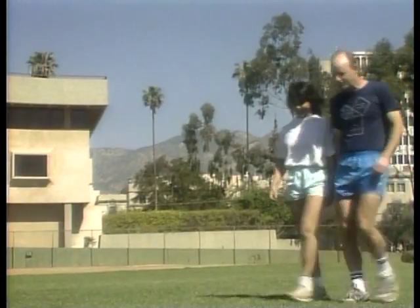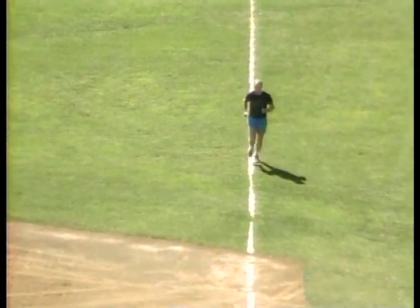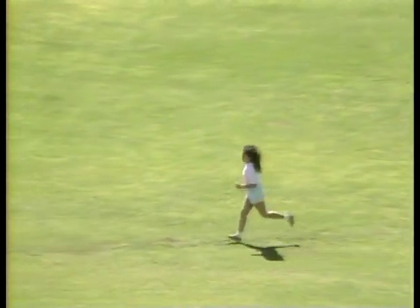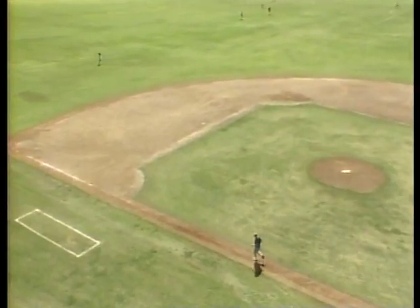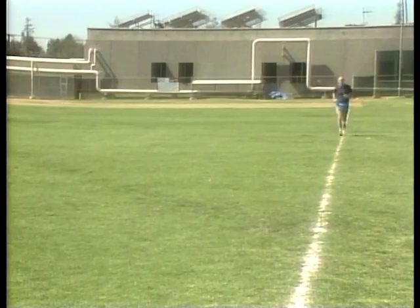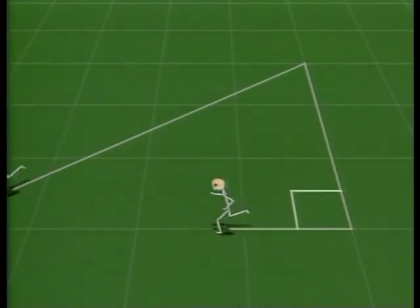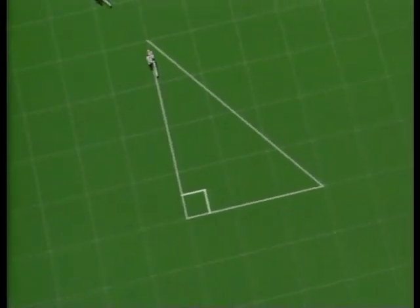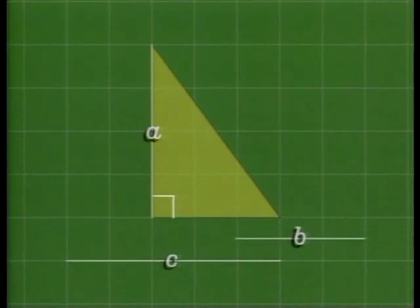Questions about right triangles come up in many different situations. For example, this jogger runs around the edges of a rectangular lot, while another takes the diagonal shortcut. How much farther is it to run all the way around rather than cutting the corner? The shortest distance between two points is a straight line, so the diagonal distance C is certainly smaller than A plus B. But how much smaller is it?